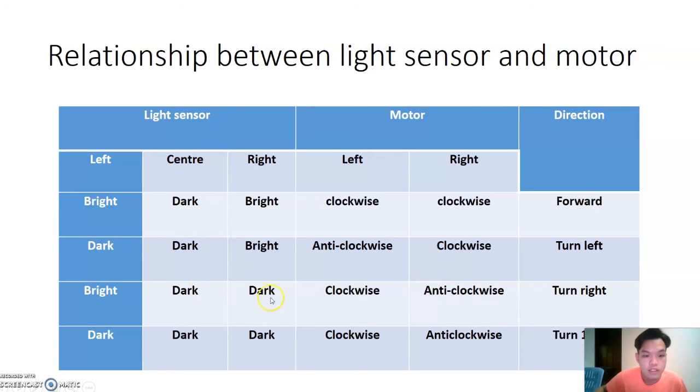The last condition is that all 3 of the light sensors sense a black line. So the left motor will move clockwise and the right motor will move anti-clockwise. And it is turned 180 degrees as the center also senses the black line. So it will turn 180 degrees until it moves forward, when left light sensor and right light sensor do not sense the black line. Thank you.